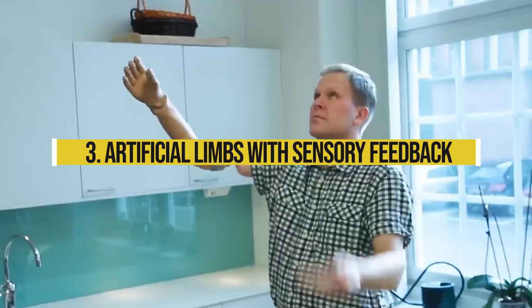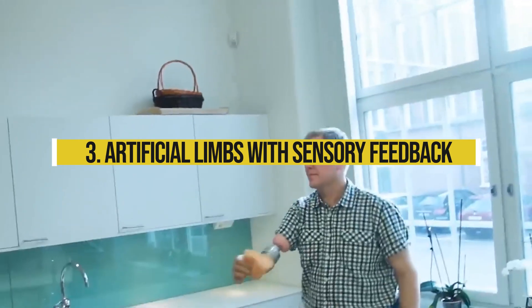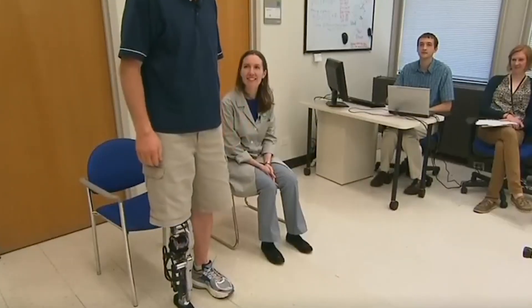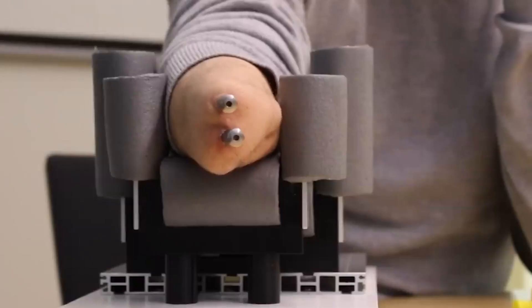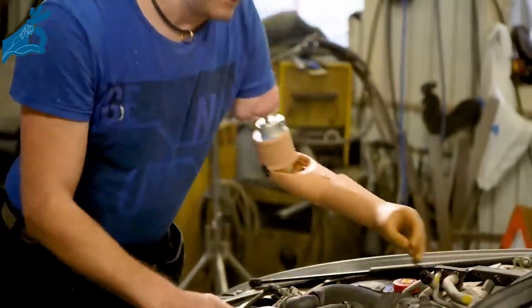Number 3. Artificial limbs with sensory feedback. For people who've lost limbs, advanced prosthetics that can feel bring the sensation of touch back into their lives. Prosthetic technology has made incredible leaps, with some devices now offering sensory feedback.